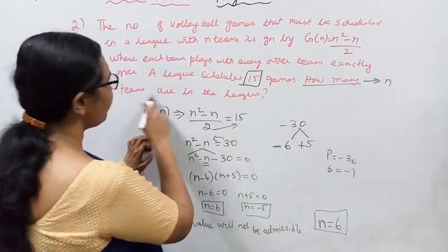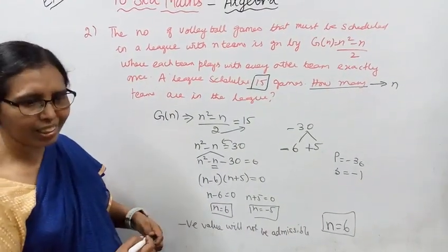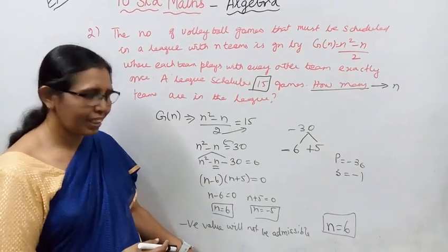The number of teams in the league is equal to 6. n = 6 is positive and valid.